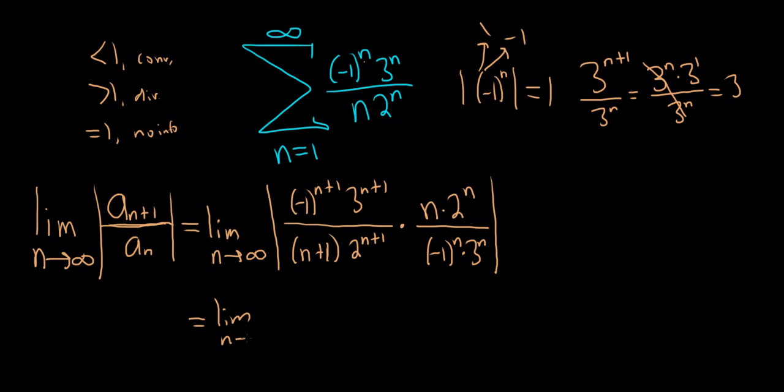So we have the limit as n goes to infinity. I'll go ahead and drop the absolute values, and we'll just get rid of the negative 1's. So we're left with the 3. We still have the n. And then the 2 to the n over 2 to the n plus 1, something similar will happen there.